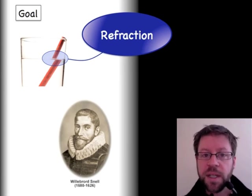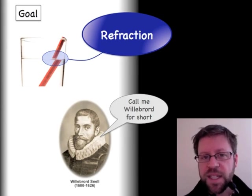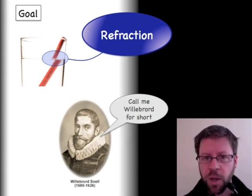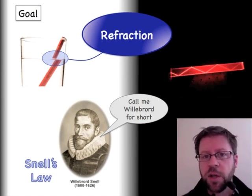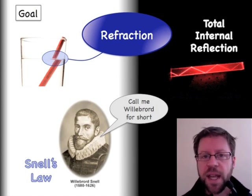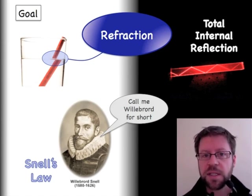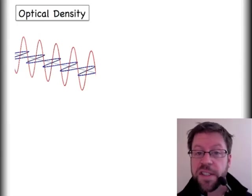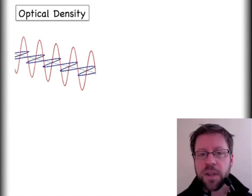We'll use some of the work done by a guy named Willebroard Snell. He has a fairly straightforward math equation called Snell's Law. In the second part of this video, I'm going to discuss something called total internal reflection, which helps us understand fiber optics for communications — something that has pretty much revolutionized the way we do things. To understand all of these topics, we need to bring up the idea of optical density.